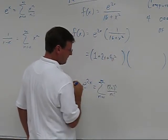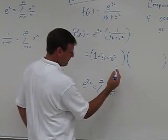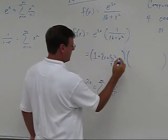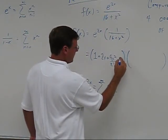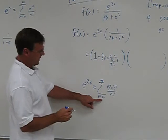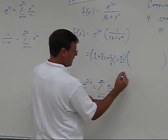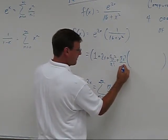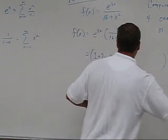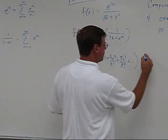So 4x squared over 2 factorial. And then one more term. When n equals 3, I get 8x cubed over 3 factorial, which is 6. And it keeps going.